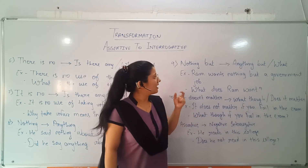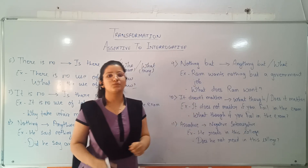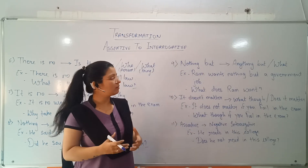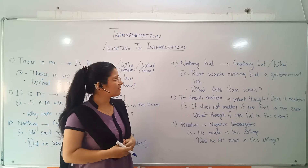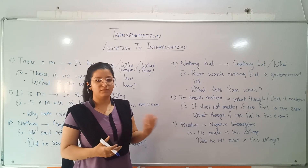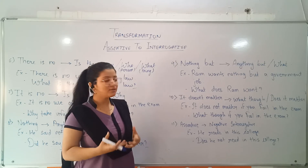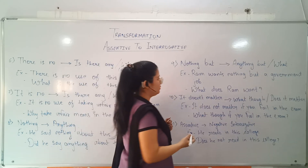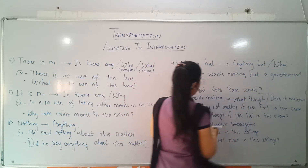Next, 'nothing but' will be replaced with 'anything but' or 'what'. For example, 'Ram wants nothing but a government job.' We replace it with: 'What does Ram want?' and end the sentence with a question mark.